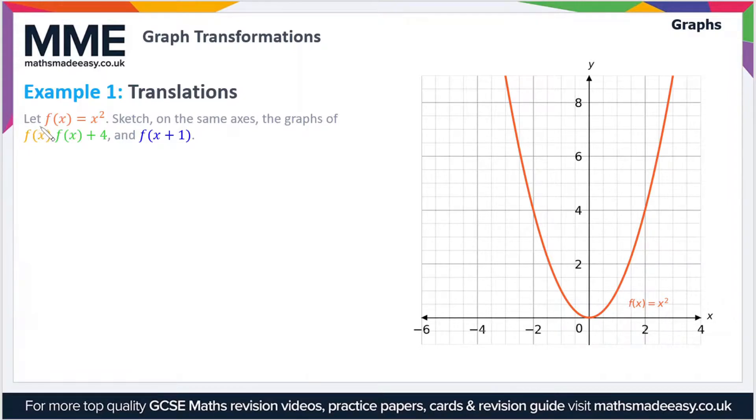Let's jump into it. We have f(x) = x² - sketch on the same axis the graphs of f(x), f(x+4), and f(x+1). We already have f(x) drawn out for us, which is very nice. That's x squared.